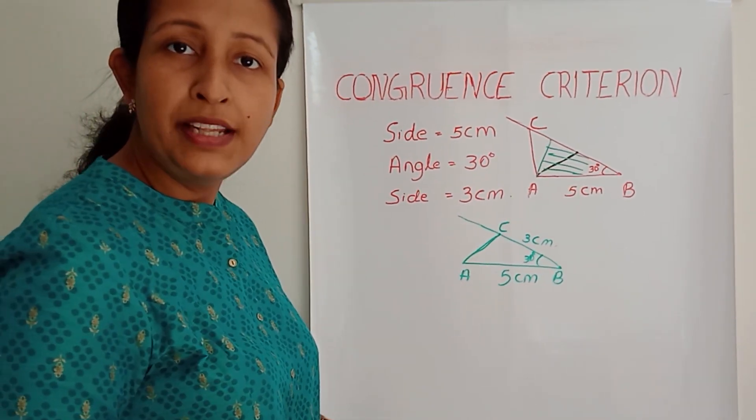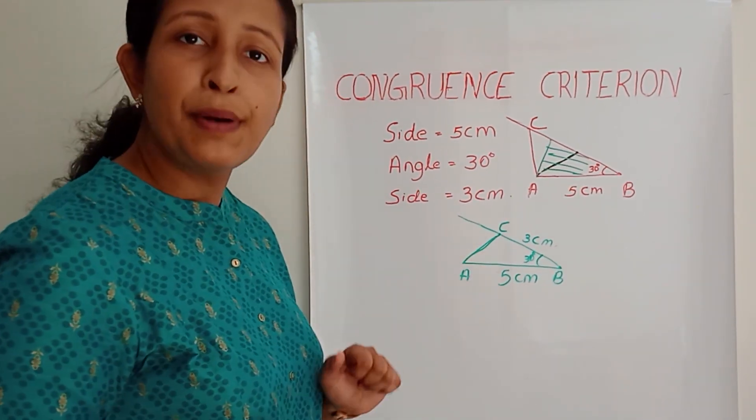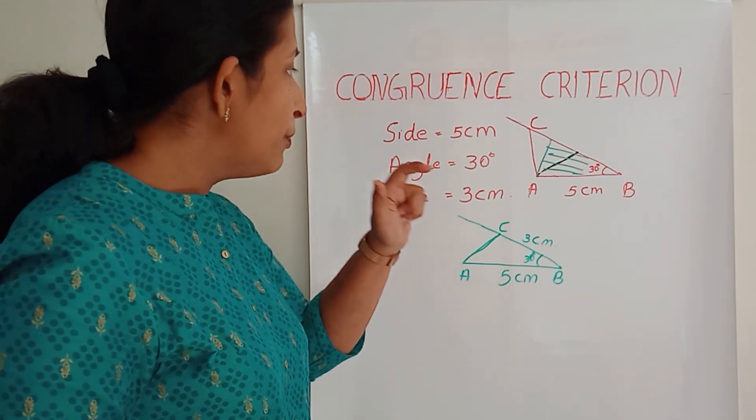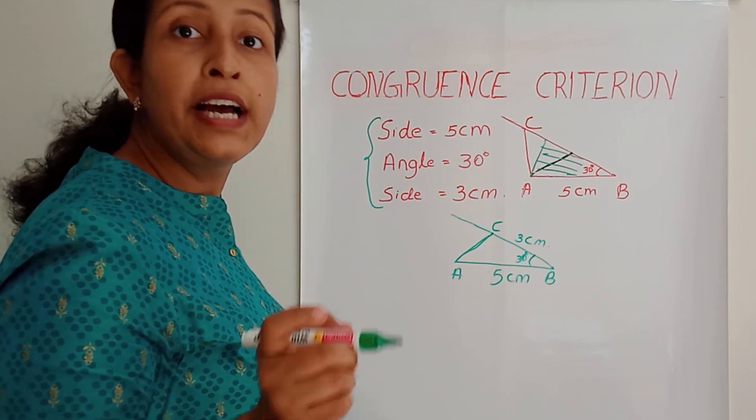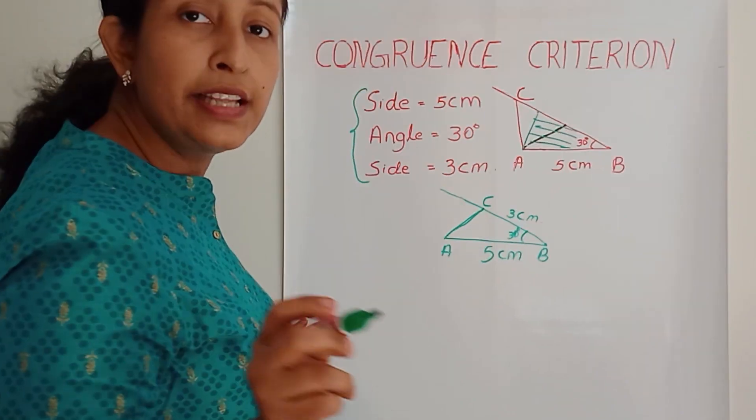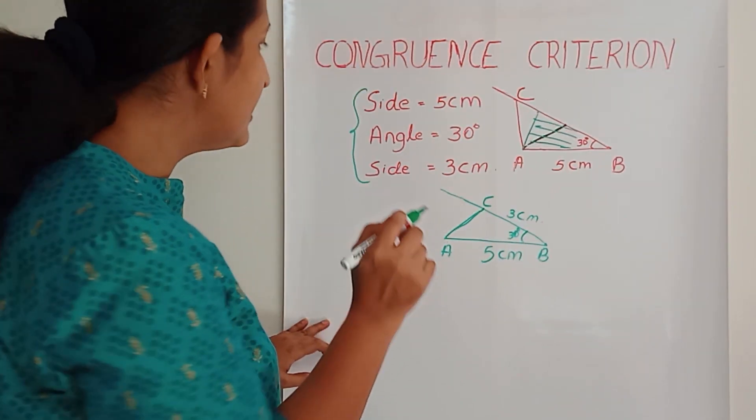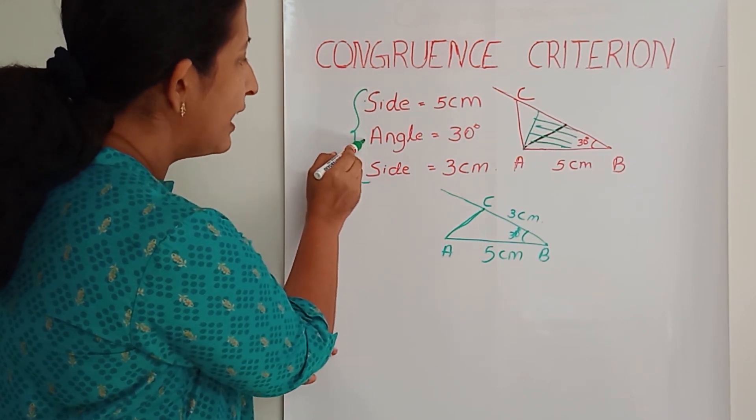Now Alan is very happy. Alan said, this is my triangle. So by getting three data, we can draw a congruent triangle. The congruent criteria is side, angle, side.